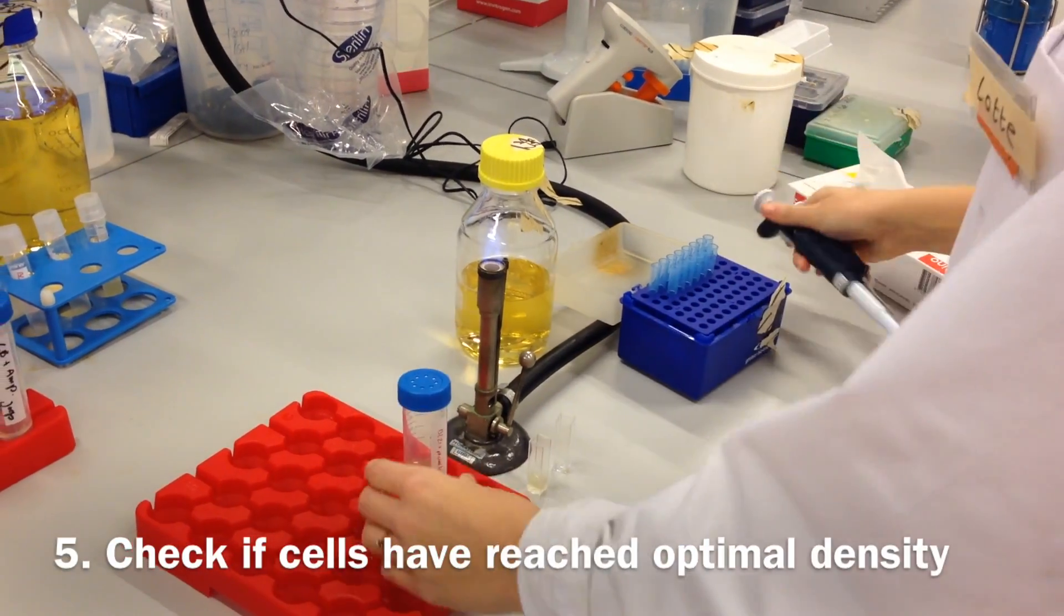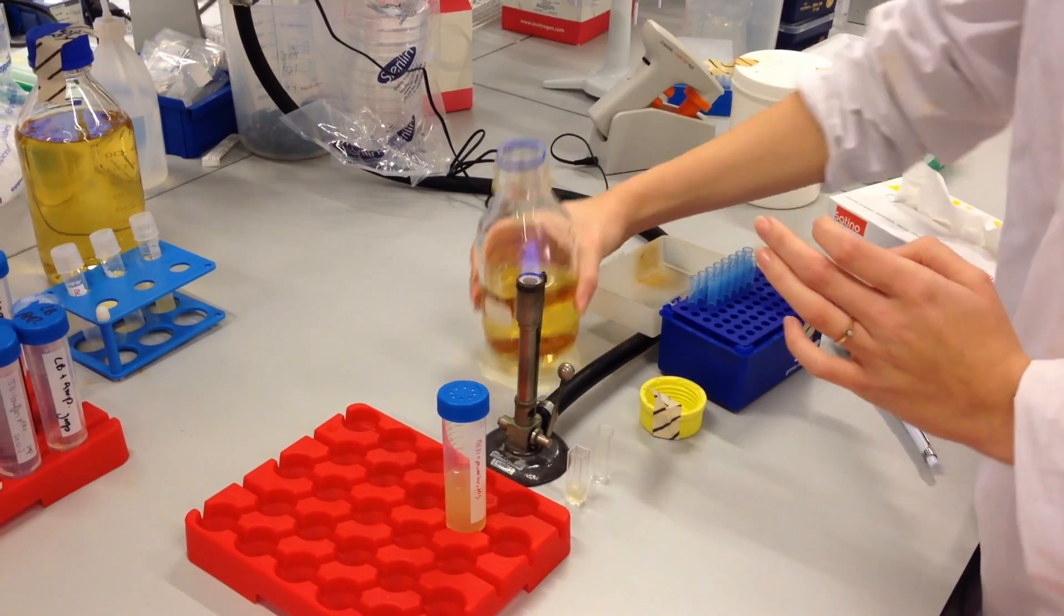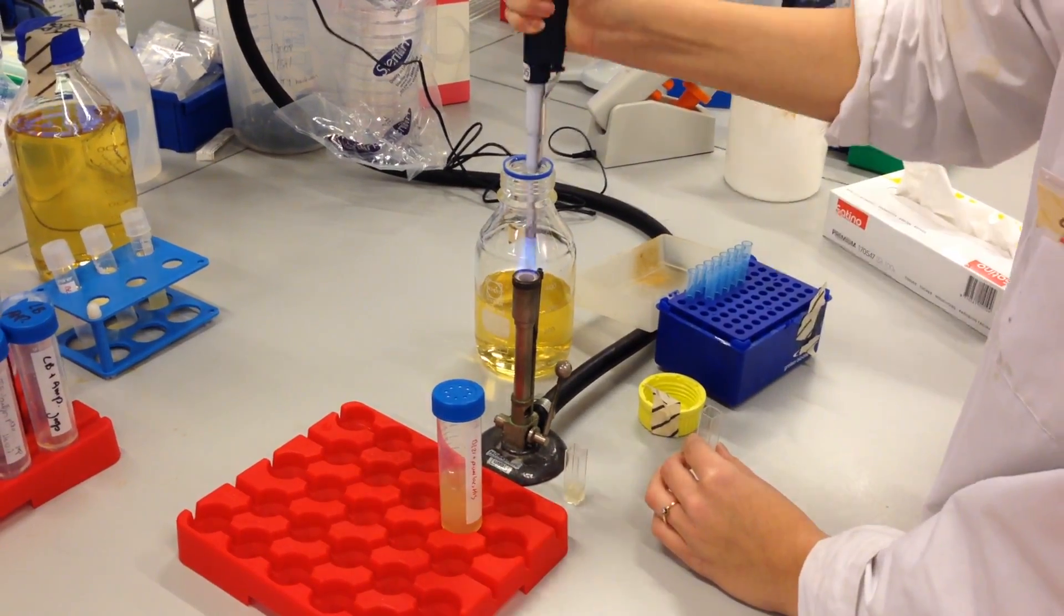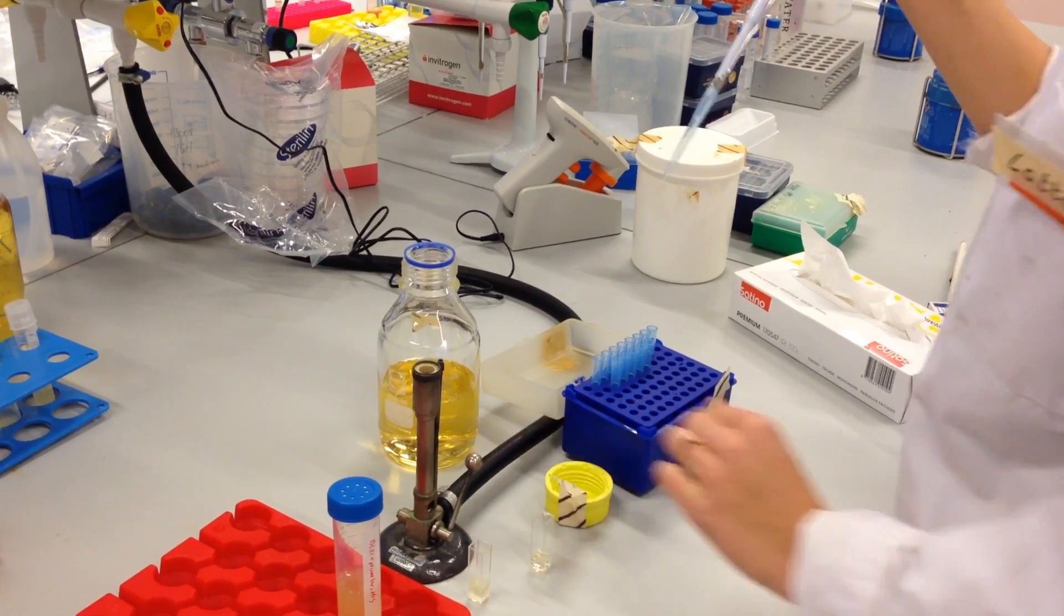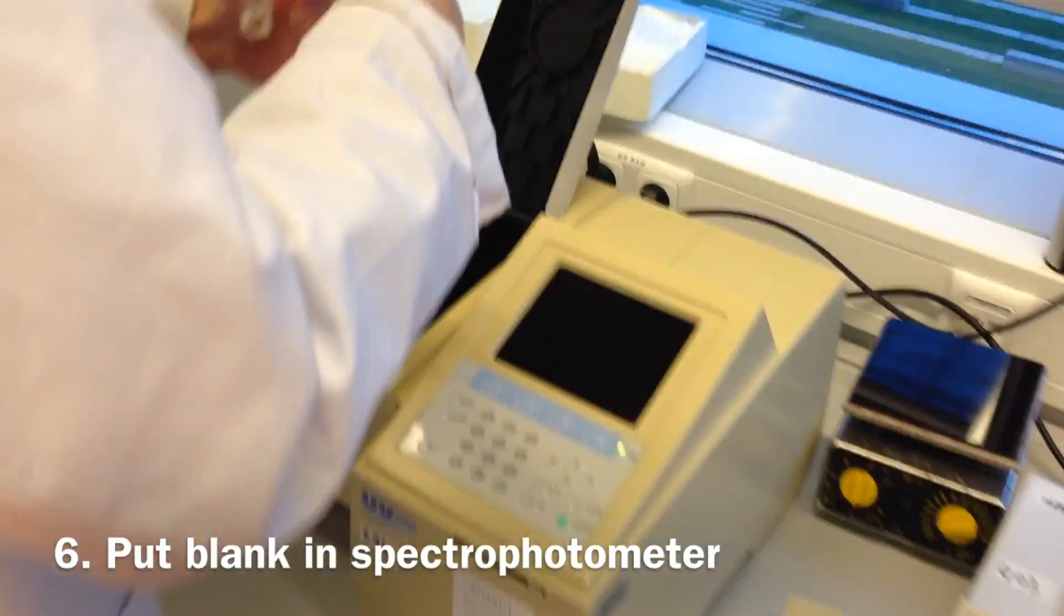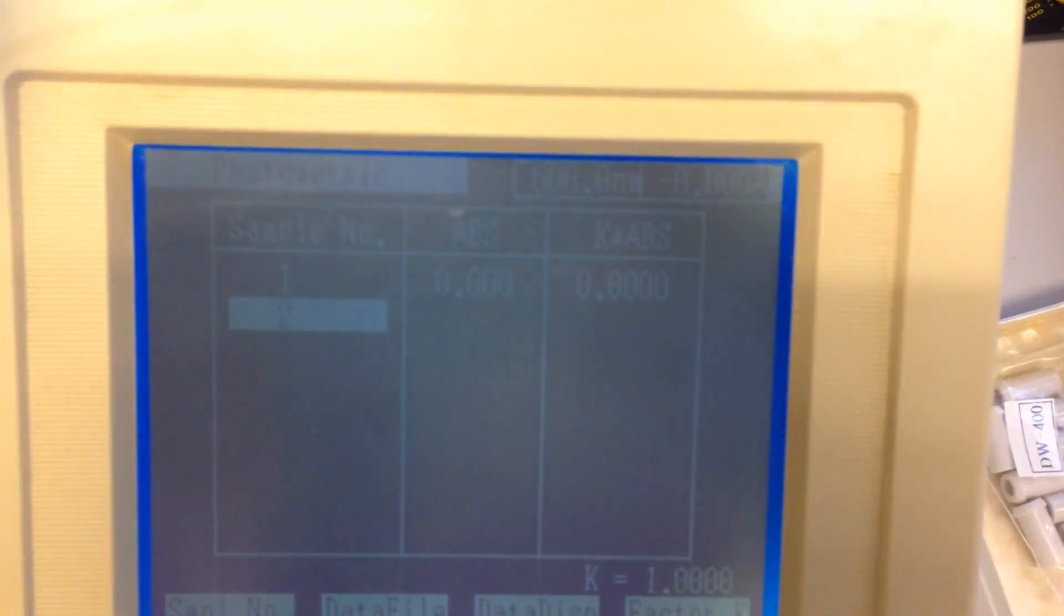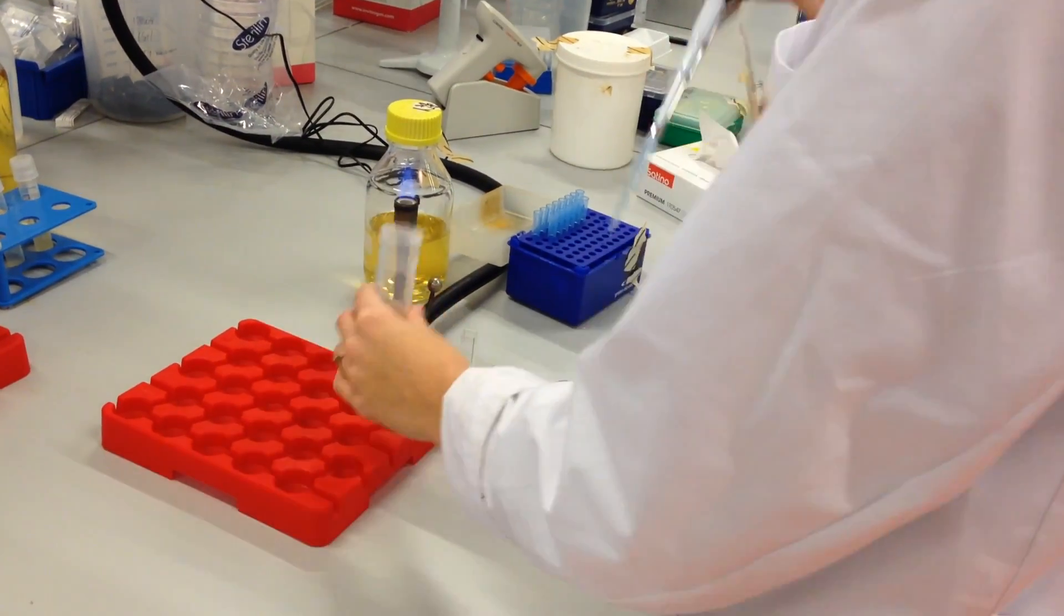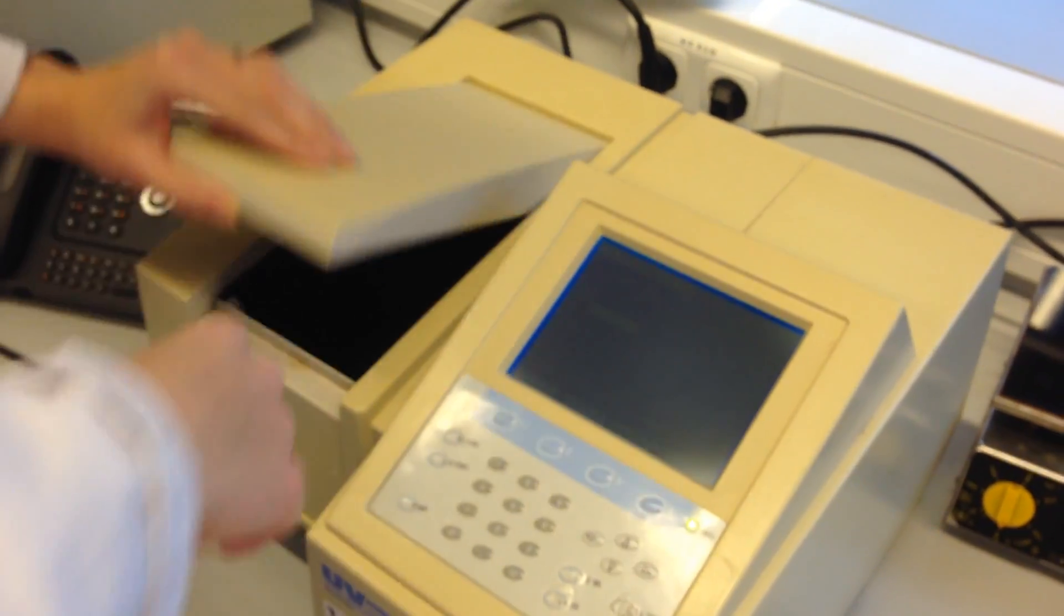We will now check if the cells have reached the optimal stadium by reading the optical density. Fill a 1 mL cuvette with 1 mL of blank cell medium solution. Put the cuvette into the spectrophotometer and read the optical density. Repeat this process with the cultured cells in medium. Read the optical density at the same settings. The growth is optimum at an optical density of 0.7 to 0.8.